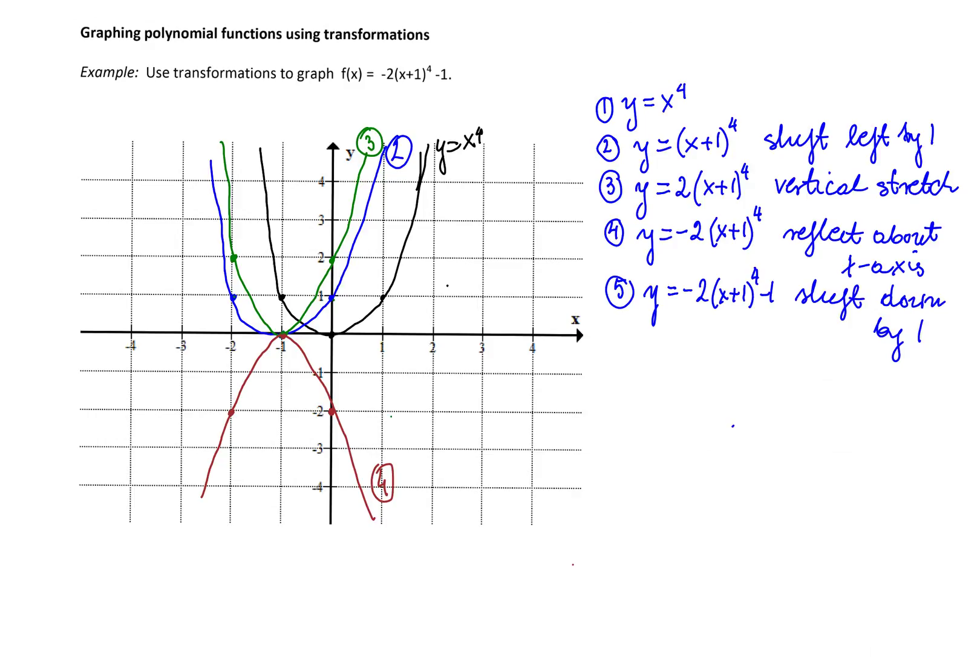And finally, what we have to do is shift down by 1. Every point is moving down by 1. The whole graph is going to move down by 1. And this is the final graph. This is the graph of the function f of x equal negative 2, x plus 1 to the fourth minus 1.